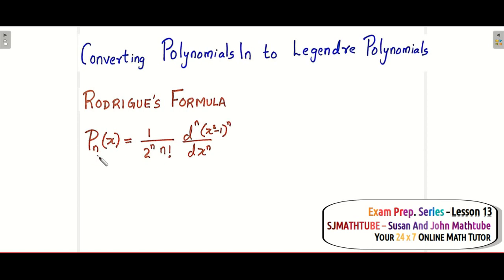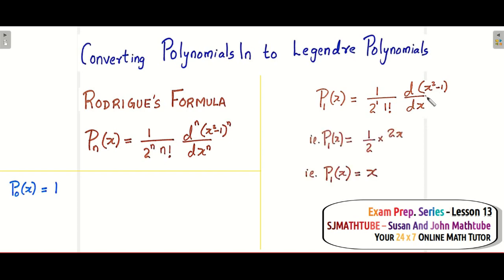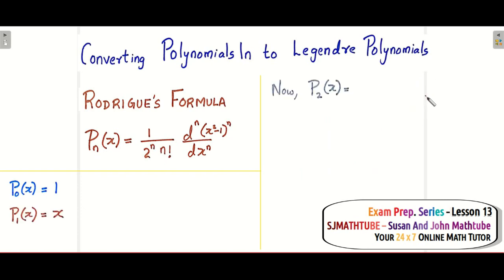All you have to do is put n equal to 0 to get P0(x). That's 1 over 2^0 times 0 factorial, which equals 1, and the 0th derivative. The 0th derivative means we write the same function, so the answer is 1. Similarly, P1(x) is 1 over 2^1 times 1 factorial times the first derivative, which gives 2x. The 2s cancel, giving you x.